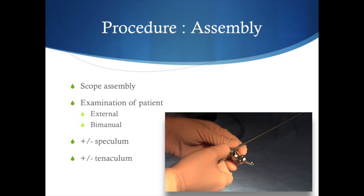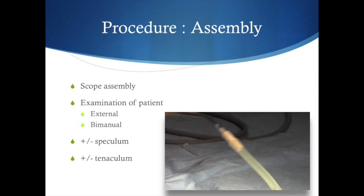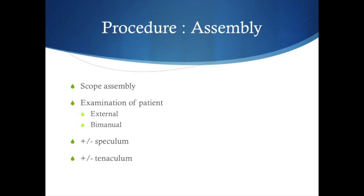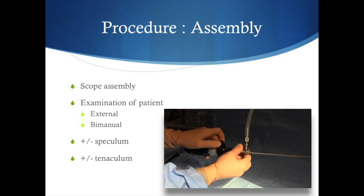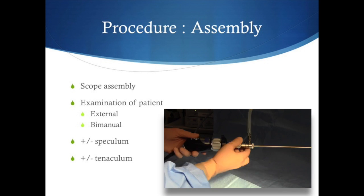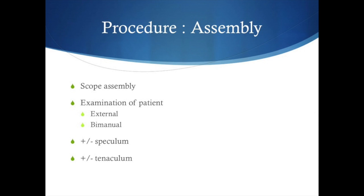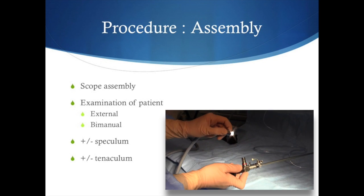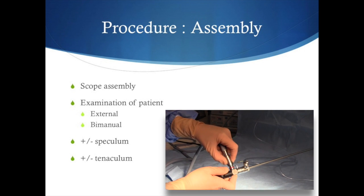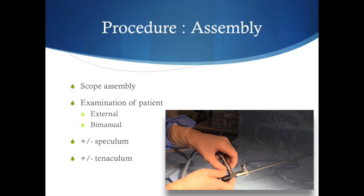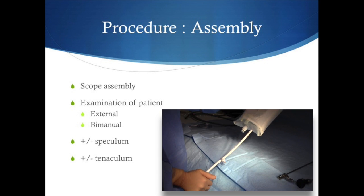The distension media is provided by a tubing system attached to the inflow channel, and the camera is attached to the end of the scope, which in turn is attached to the visualisation system or stack. The light source is attached to the scope and the pressure behind the distension media should be set halfway between the patient's systolic and diastolic blood pressure.